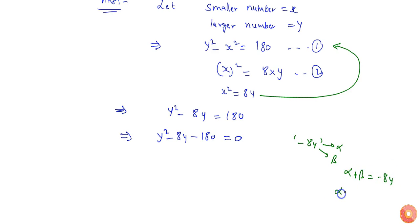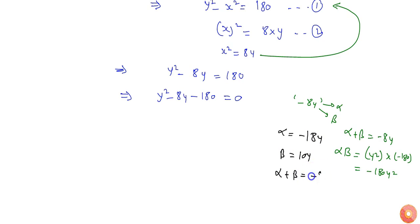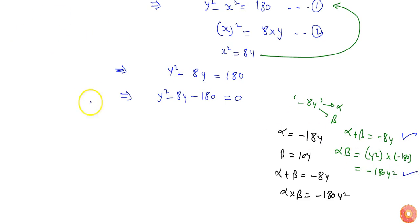Alpha times beta must equal the product of the remaining terms, which is Y squared times minus 180, giving minus 180 Y squared. If I consider alpha to be minus 18Y and beta to be 10Y, then alpha plus beta equals minus 8Y, and alpha times beta equals minus 180 Y squared. So these considered values of alpha and beta satisfy both conditions.